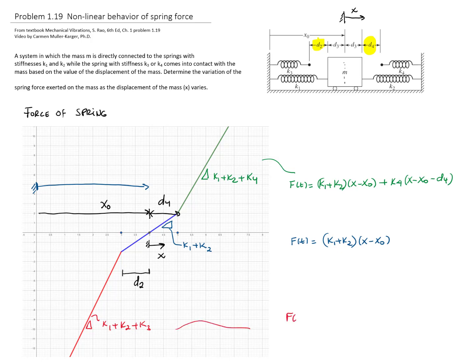And for this section of the curve, I have the same k1 plus k2 times x minus x sub 0, and I have to add k3 times x minus x sub 0 plus d2.